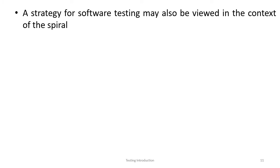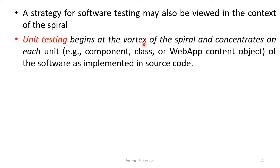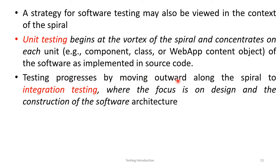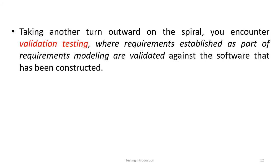A strategy for software testing may also be viewed in the context of a spiral. Testing begins at the vertex of the spiral and concentrates on each unit individually — one component, one function, one class. Then testing progresses along the spiral to integration testing, which focuses on design and construction. Then validation testing verifies that customer requirements are satisfied.